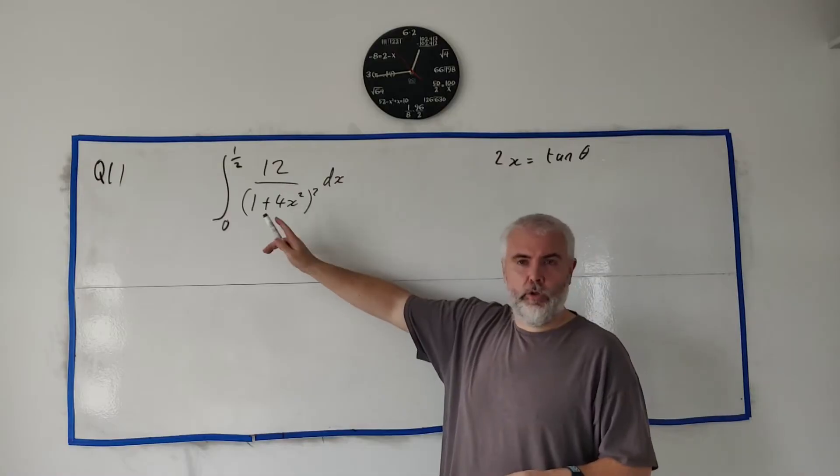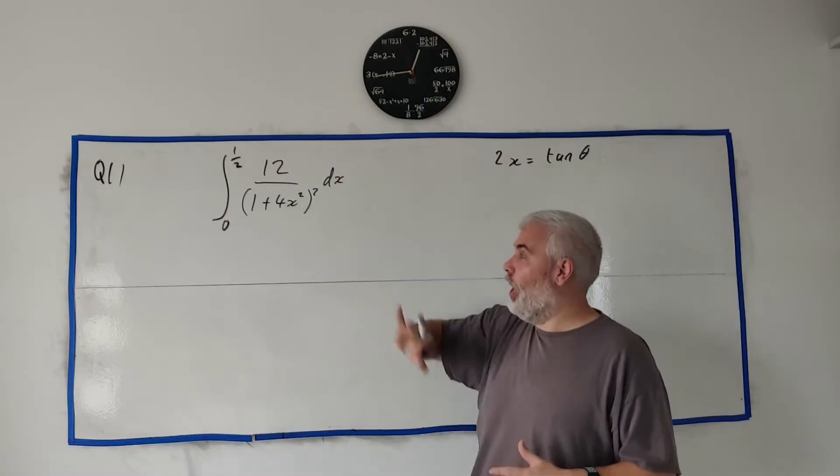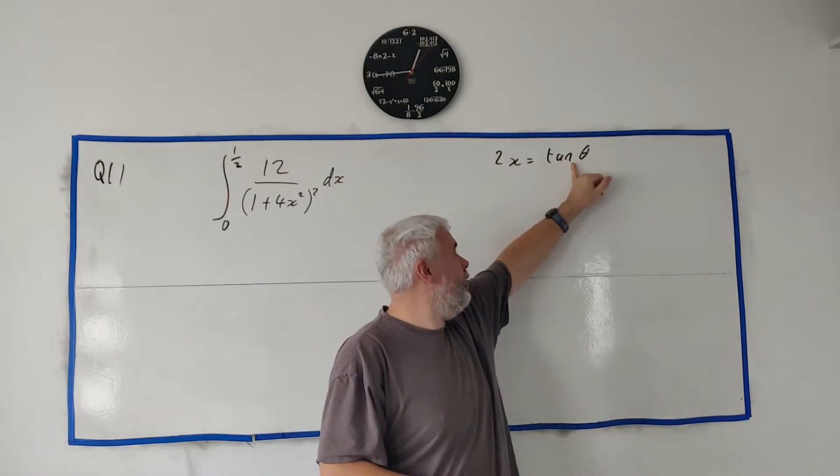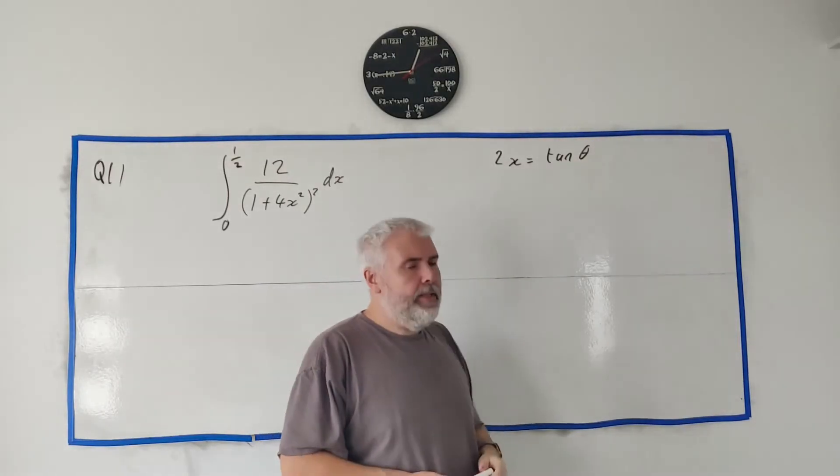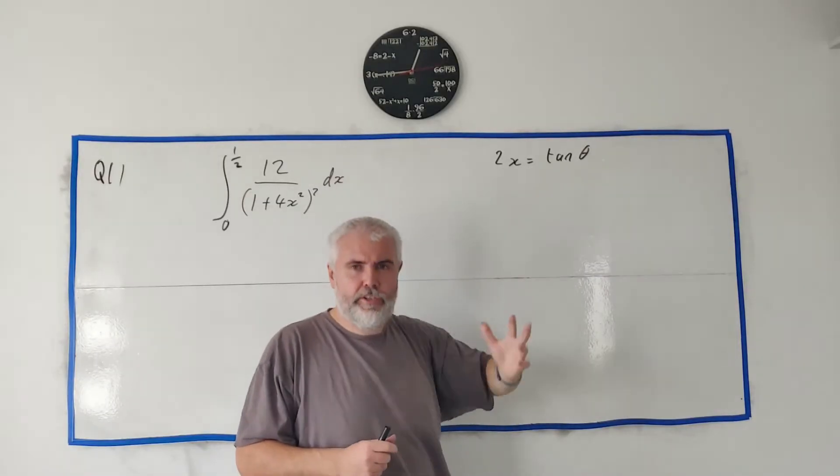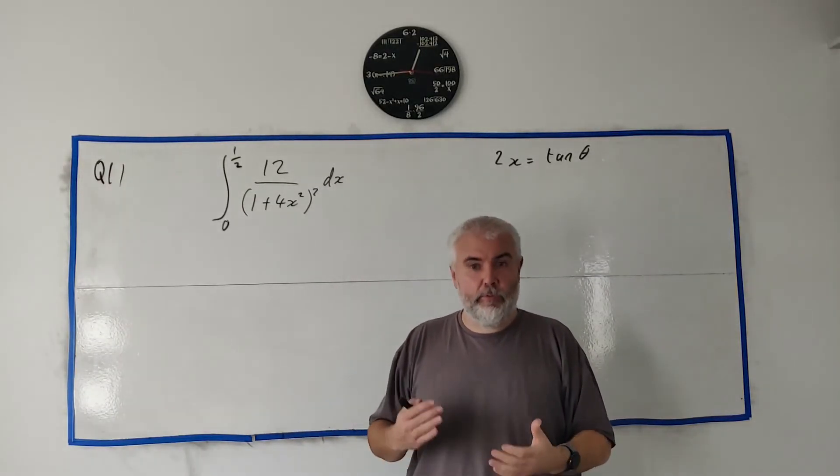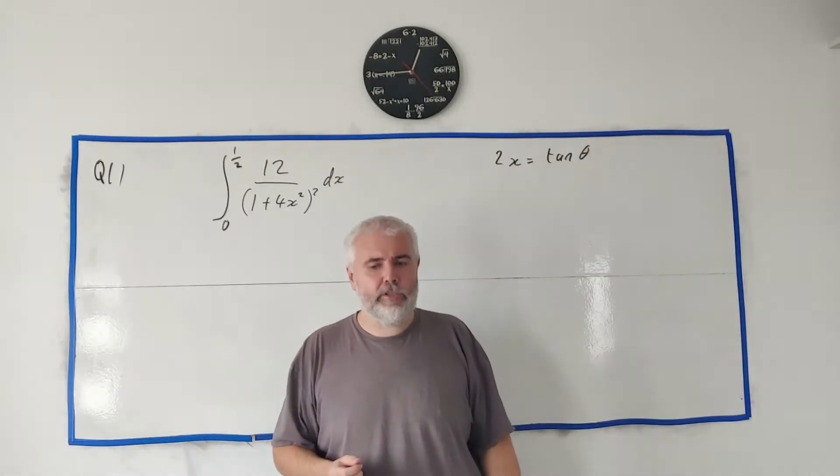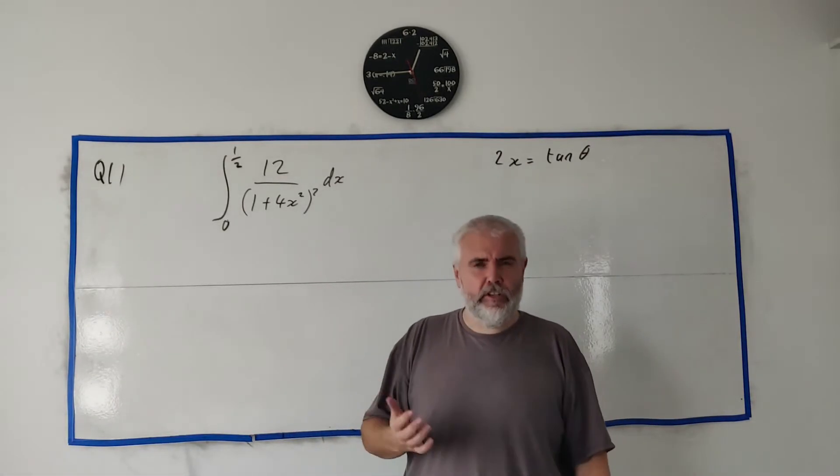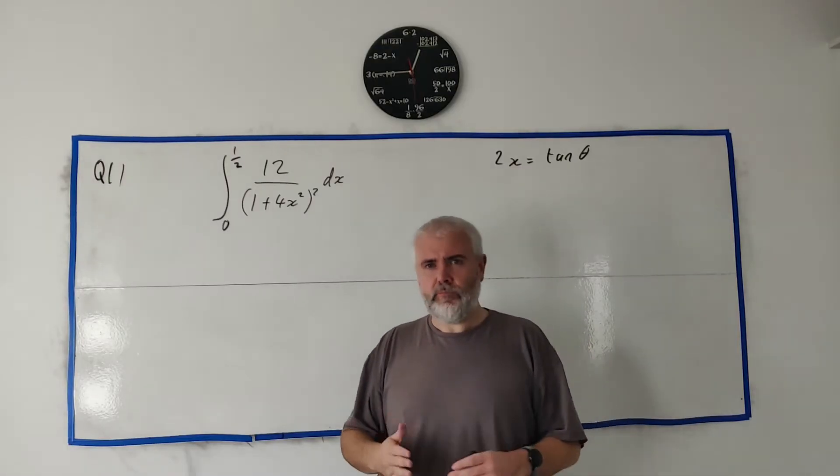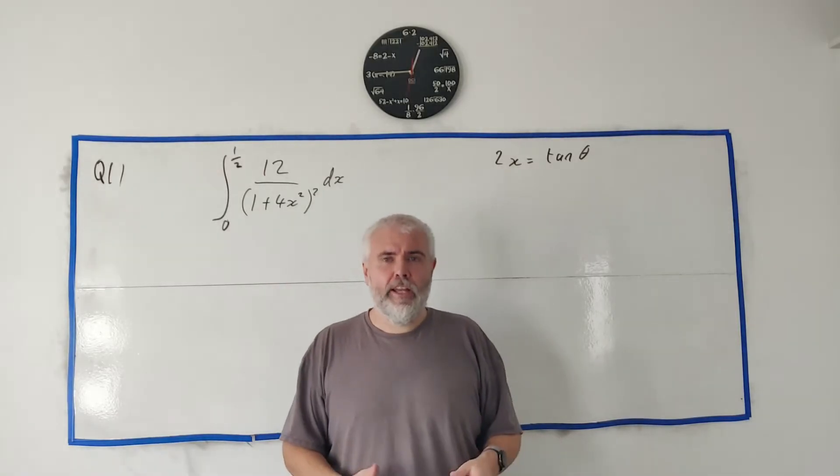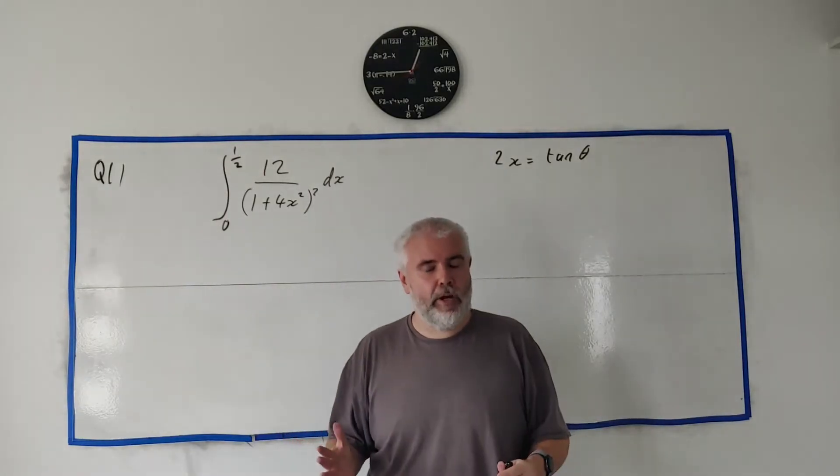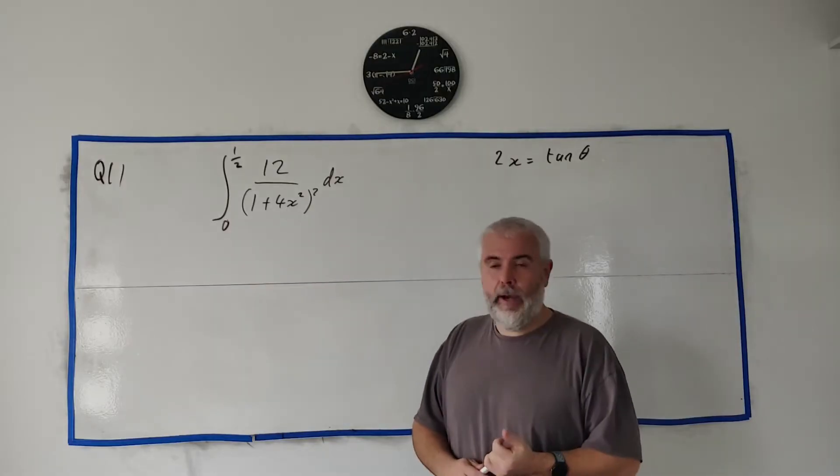In question 11 they give us this integral to do. There's nine marks for it so it is quite difficult and long. They thankfully do give us one hint: use substitution 2x equals tan θ. Now this introduces a trigonometric feature to the question that's going to be prevalent throughout. This question is strange in that you don't actually have to do much maths - we need to remember a lot. In real life mathematicians don't always solve from first principles, they often just look up the answer. In this case we're going to be using our formula tables probably four or five times to do different parts of this question and to make it a lot simpler.